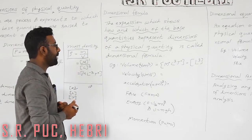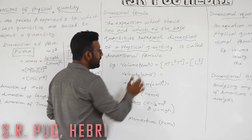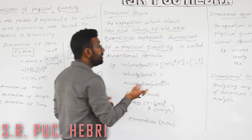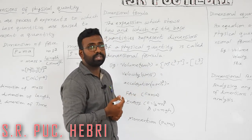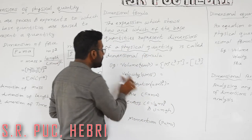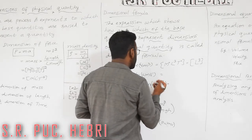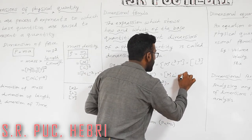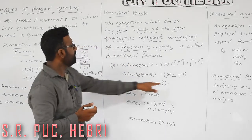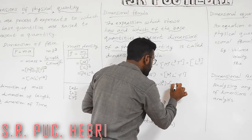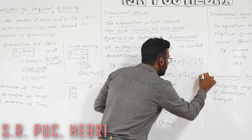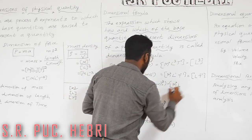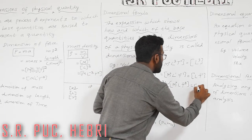Some examples of dimensional formulas: Volume is M⁰ L³ T⁰, which we simply write as L³. Velocity is meter per second, so M⁰ L¹ T⁻¹, written as L T⁻¹. Acceleration is M⁰ L T⁻², written as L T⁻².